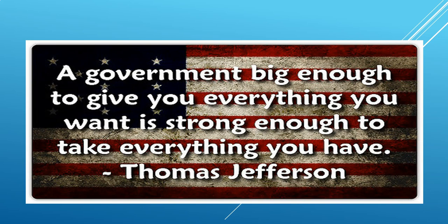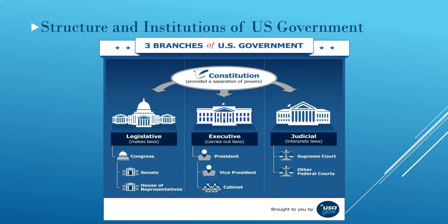The structure and institutions of the US government: the United States is divided into three branches. The first branch is the legislative branch — this is the branch in charge of creating laws for the entire nation, and it is known as Congress. Congress has two components: the first is the Senate, with 100 senators, two per state, and the other component is the House of Representatives, with 435 members. Those members come from different states, and depending on the population, that determines the number of representatives given to that state.